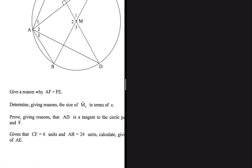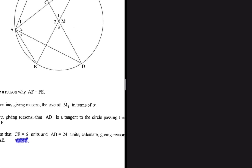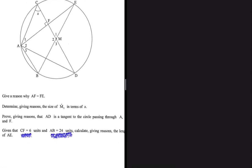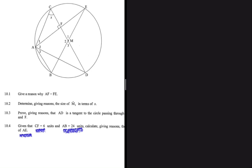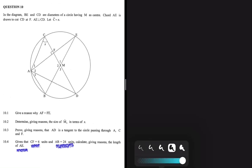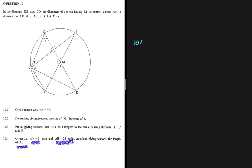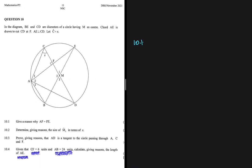Look at how interesting 10.4 is, given that CF equals 6 units and AB equals 24 units — we need to find the length of AE. But before we do that interesting one, let's go through 10.1 first. Before I start answering these questions, I like going through the question statement so that I can jot down a few keywords.